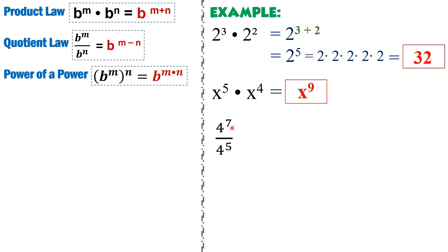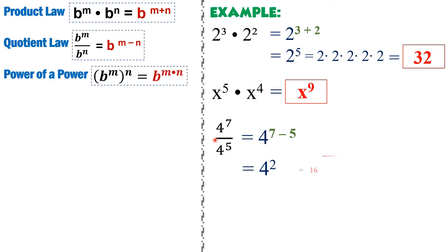For example, 4 raised to 7 over 4 raised to 5. Both have the same base, so copy the base and subtract the exponents: 7 minus 5 gives us positive 2. So we have 4 squared. Simplifying, 4 times 4 gives a final answer of positive 16.